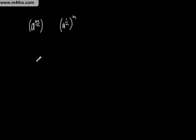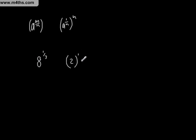So, let's have a look at something really quite straightforward. If I've got 8 to the 1 third power, what I'm going to do is take the cube root of 8 — the denominator is the root that I take of it. The cube root of 8 is 2, and then I raise it to the first power, which of course is just 2. So those two notations are identical.